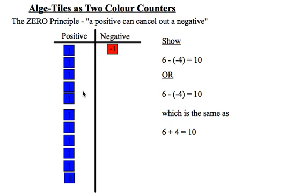Plus another six, I have a total of 10 unbalanced positive tiles. So when we look at this operation, six subtract negative four yields a result of 10.